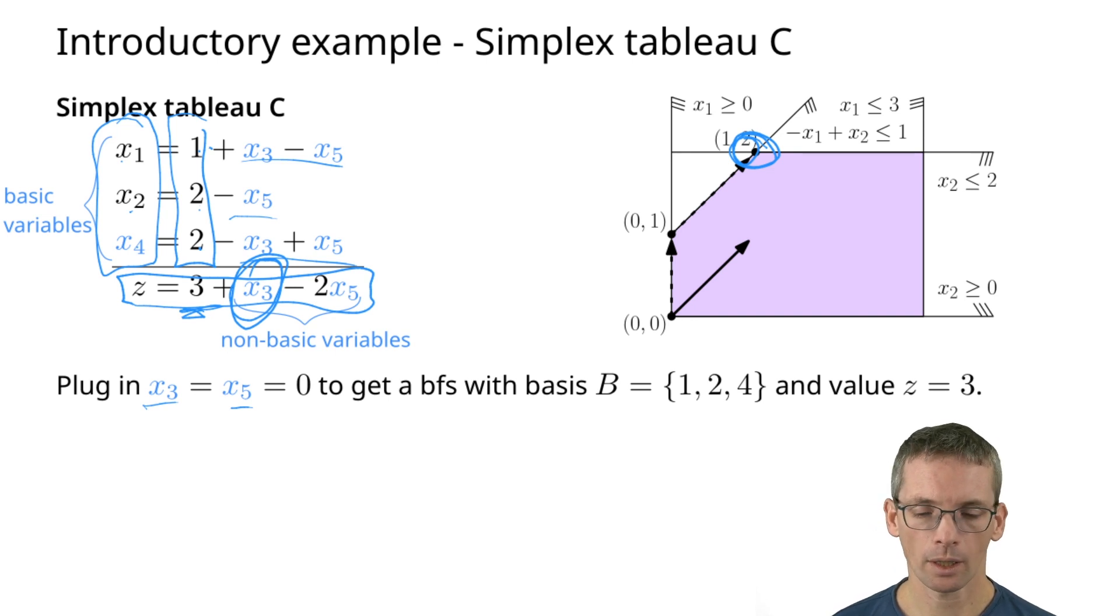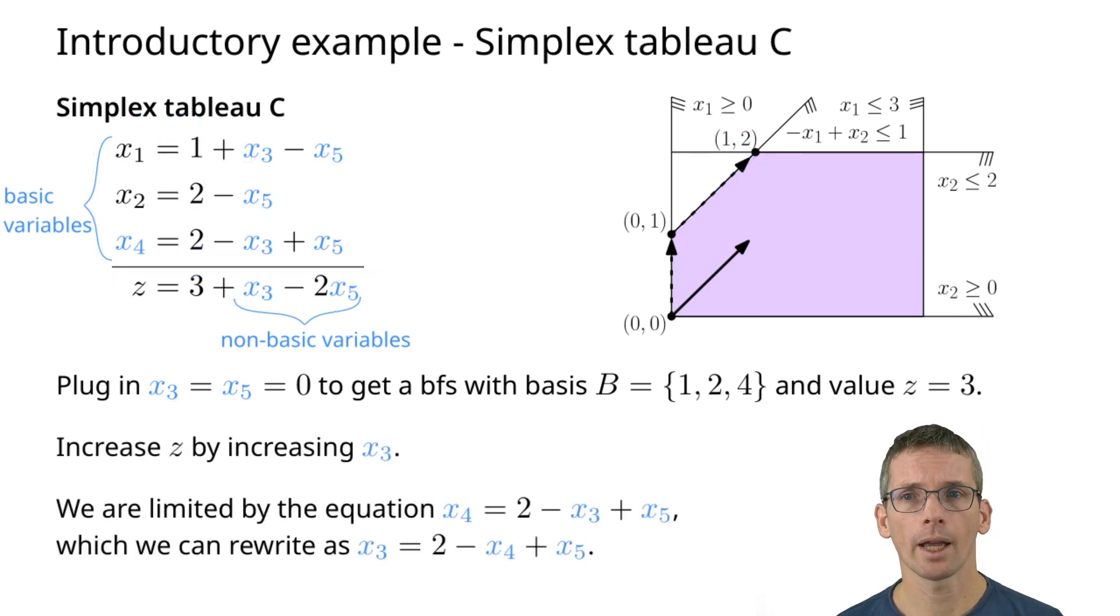Again we look at this function here and we see we could further increase it by increasing x3. We need to look at how far can I increase x3. x1 does not limit x3 because it shows up positively. x2 also doesn't limit x3 but x4 limits x3. So we can increase it at most to 2.